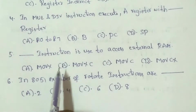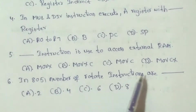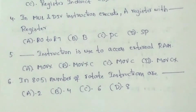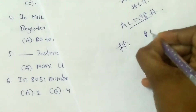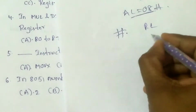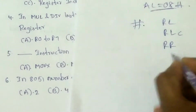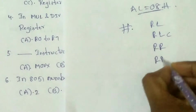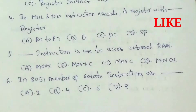Next question: In the 8051 microcontroller, how many rotate instructions are there? There are 4 rotate instructions: RL (Rotate Left), RLC (Rotate Left through Carry), RR (Rotate Right), and RRC (Rotate Right through Carry). The answer is B: 4 instructions.